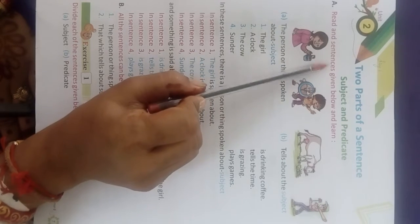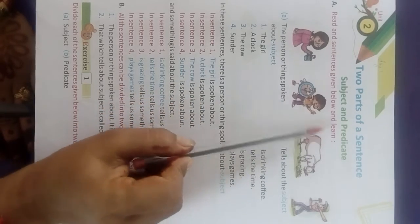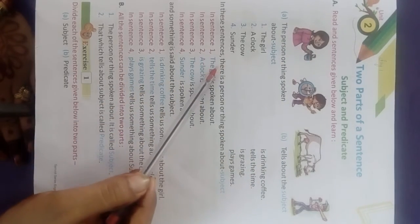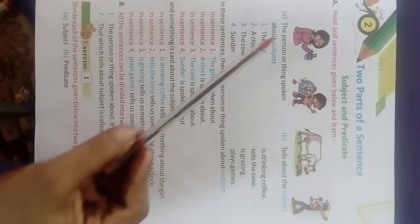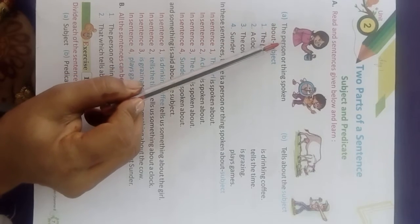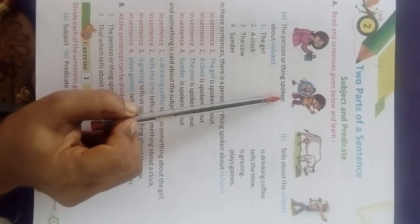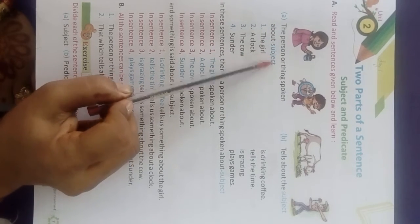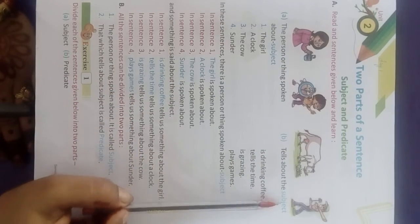Read the sentences given below and learn. Part A is about the person or thing spoken about — that is the subject. Part B tells about the subject — that is the predicate.